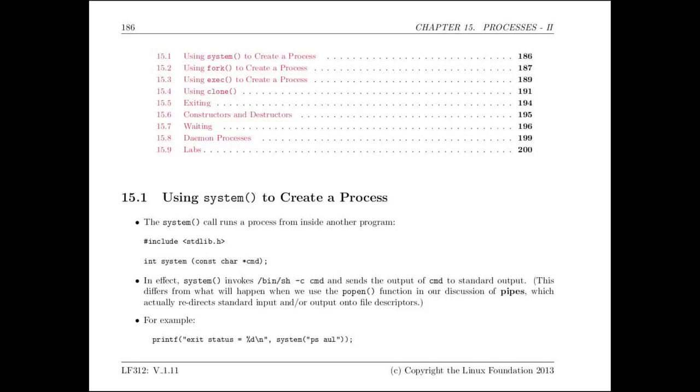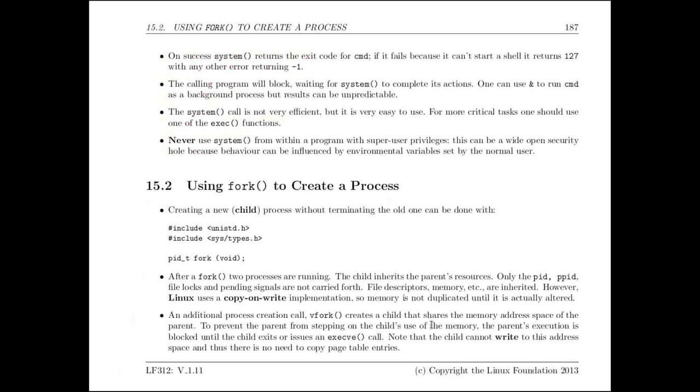The first function we discussed for creating a process in Linux is the system command. The system command is very simple. You simply call system and give it as an argument the program or command that you would like to create a new process, such as in this little example down here in the middle of a print statement. Now, the problem with system, while it's very easy to use, it's expensive because it creates a whole new fork, which we'll talk about next, to do something in a pipe in order to get access to the output. It's very sensitive to things in your environment, such as various environmental variables. So it's easy for somebody to do an exploit where they make your command do something very different.